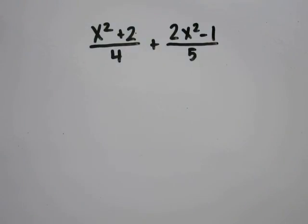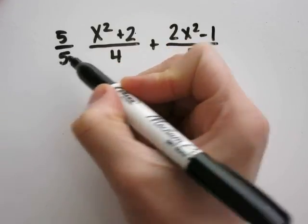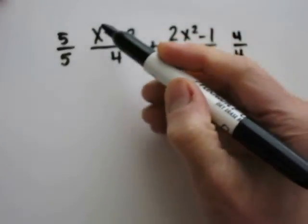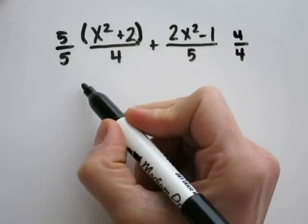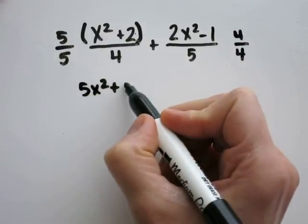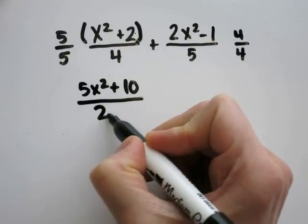Problem 17: x squared plus 2 over 4 plus 2x squared minus 1 over 5. We're adding fractions, so we need a common denominator, which would be 4 times 5. You'll need to take 5 over 5 times the first side and 4 over 4 times the second side. 5 times x squared is 5x squared, and 5 times 2 is 10.